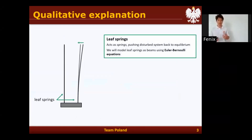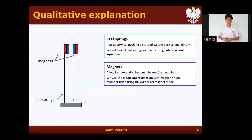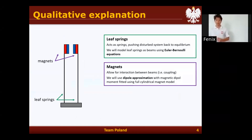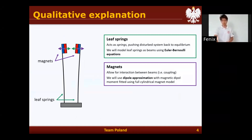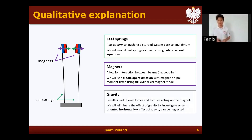First, we have the leaf springs, which cause oscillation in the system, and we model it using the Euler-Bernoulli equation. We also have the magnets, which cause coupling in the system, and we model it using the dipole approximation. Gravity could also have an effect on torques and forces, however we eliminated this by placing our system horizontally.